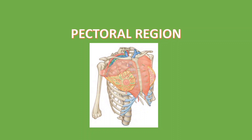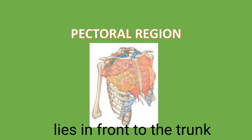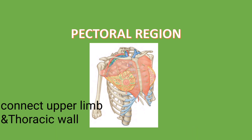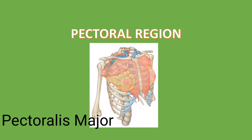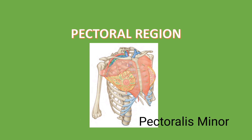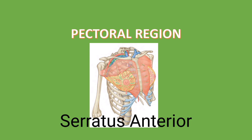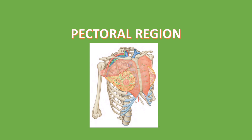Let's start the new topic: pectoral region. It lies in front of the trunk, anterior to the thoracic cage, and connects the upper limb and the anterior lateral part of the thoracic wall. The major contents of the pectoral region include the mammary gland, pectoralis major muscle, subclavius muscle, pectoralis minor muscle, and the serratus anterior muscle.